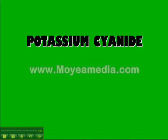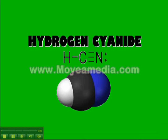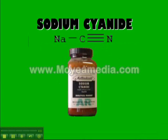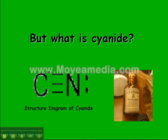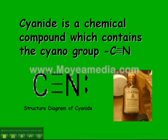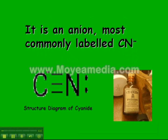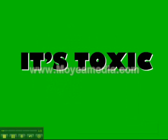Cyanide. There are many different types of cyanide, such as potassium cyanide, hydrogen cyanide, sodium cyanide, and many more. But what is cyanide? Cyanide is a chemical compound which contains the cyanide group. It is an anion, most commonly labeled CN-, and most importantly, it is toxic.